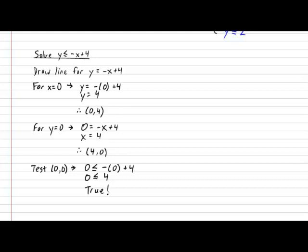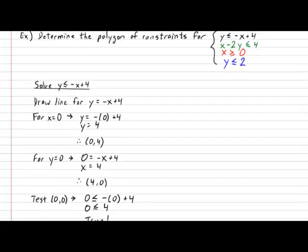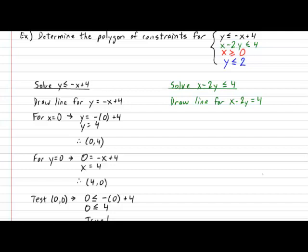Next, let's tackle the solution for our second inequality in the system. First, let's start by drawing the line for that rule: x minus 2y equals four. I'm going to stick with simply plugging in random x and y values to get two points. I'm going to try x equal to zero. We get zero minus 2y equals four. Simplifying gives us negative 2y equals four. Therefore, y equals negative two. That gives us our first point located at (0, -2).